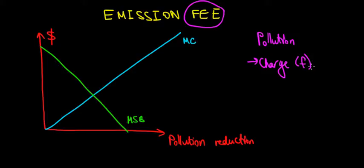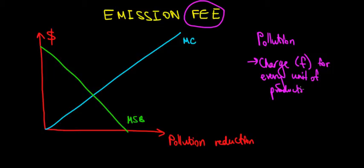We charge a tax for every unit of production. We need to understand the nature of the marginal cost — it is an increasing marginal cost, meaning that reducing the pollution implies a cost for the company. We could think about it as investments in technology to reduce that pollution.